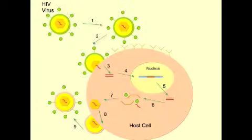Keep in mind, in this graphic only one new virus is shown leaving the cell. However, in reality there are hundreds of viruses budding out of the host cell, which compromises the integrity of the host cell membrane and leads to cell death. This is why the cells of the immune system decrease in number, because the rate of new host cell production can no longer rejuvenate the number of host immune cells degraded by the HIV virus.